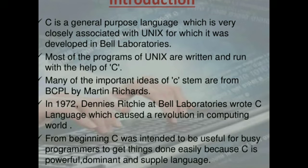C is a general purpose language which is very closely associated with Unix, for which it was developed in Bell Laboratories. Most of the programs of Unix are written and run with the help of C. Many of the important ideas of C stem from BCPL by Martin Richards. In 1972, Dennis Ritchie at Bell Laboratories wrote C language, which caused a revolution in the computing world. From the beginning, C was intended to be useful for busy programmers to get things done easily, because C is a powerful, dominant and supple language.